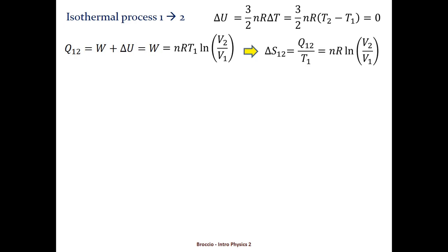By definition of entropy change, the entropy change is the heat exchange divided by the temperature which is constant during the isothermal process. So we get nRT1 over T1 cancels, leaving logarithm of V2 over V1.